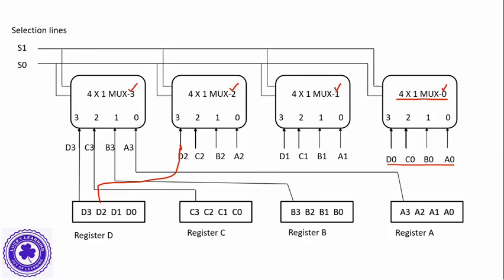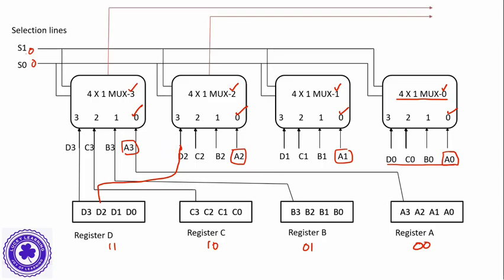All four multiplexers share common selection lines S1 and S0. When S1 and S0 are both 0-0, every multiplexer selects its 0th input — that is A0, A1, A2, A3 — meaning register A is selected and its data is placed on the common bus. If S1 S0 is 0-1, register B is selected; 1-0 selects register C; 1-1 selects register D. Each multiplexer produces one output, so four multiplexers produce four output lines — this is the four-line common bus.